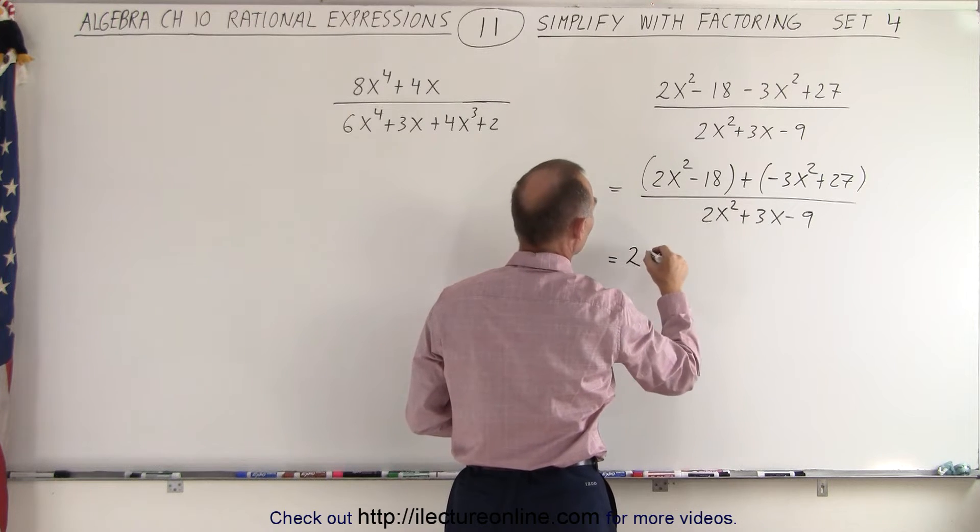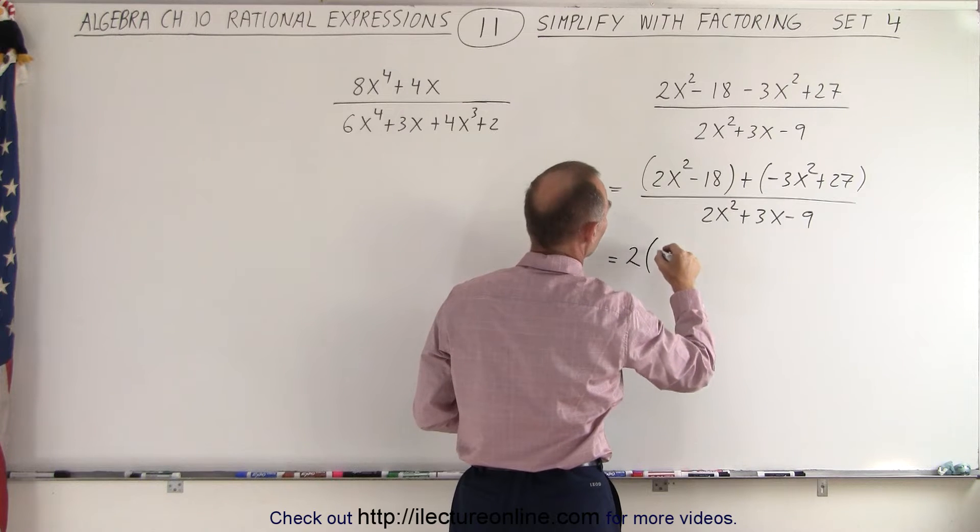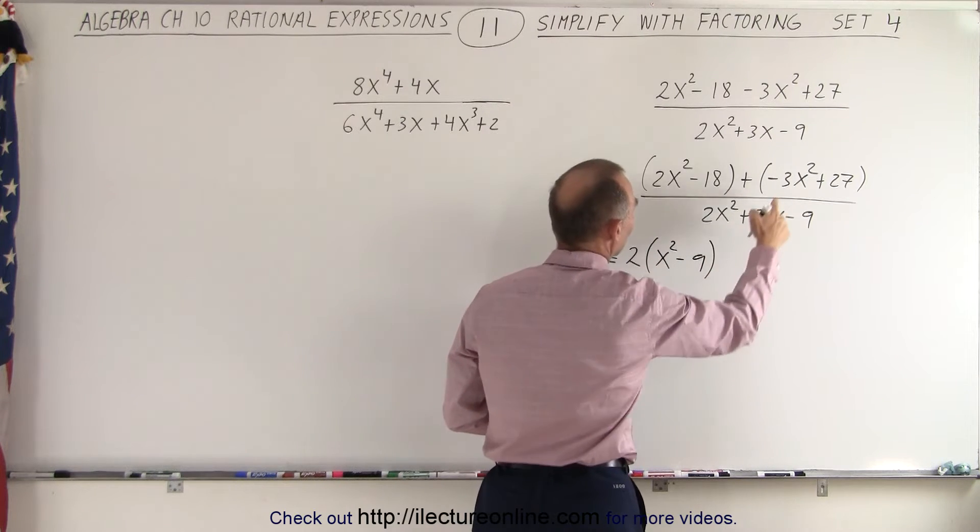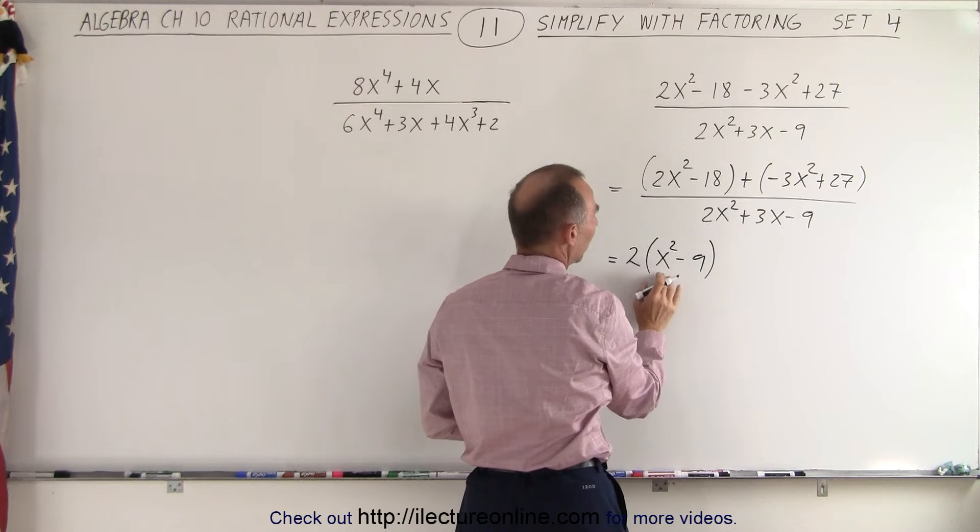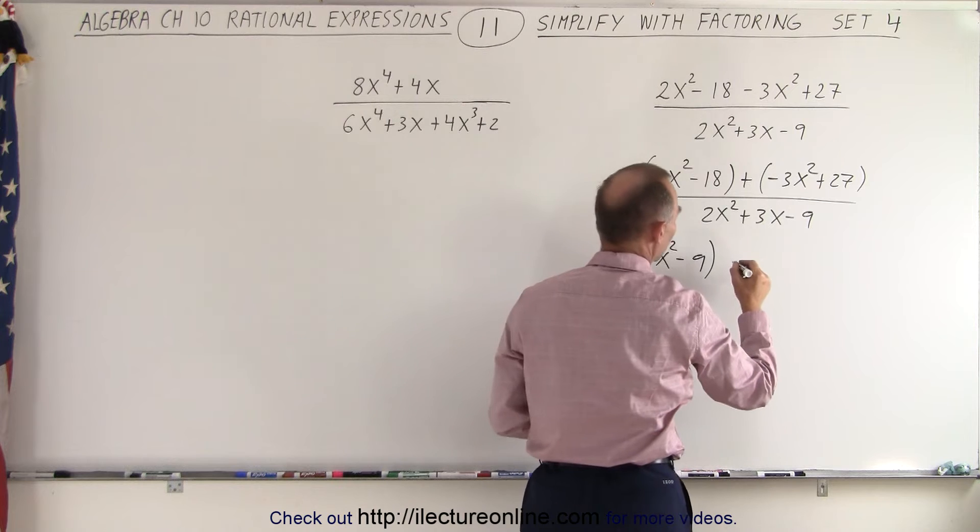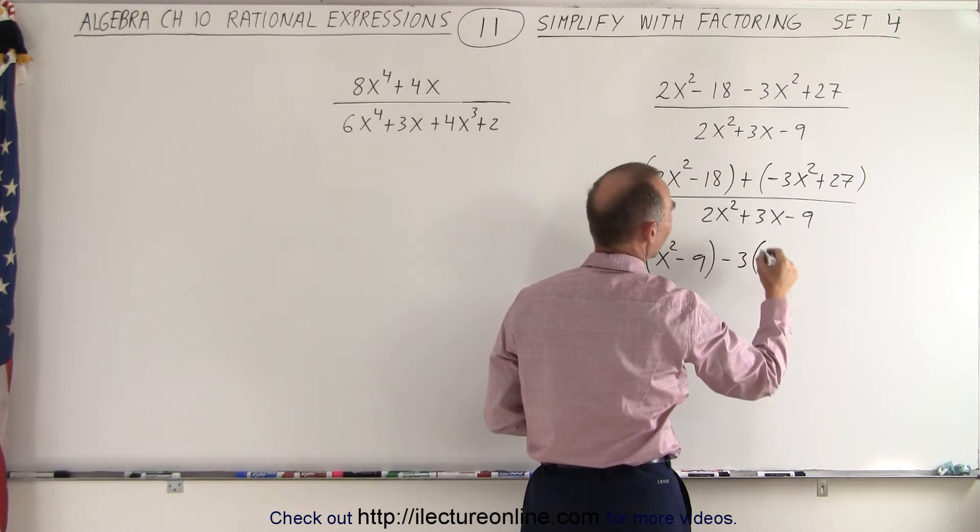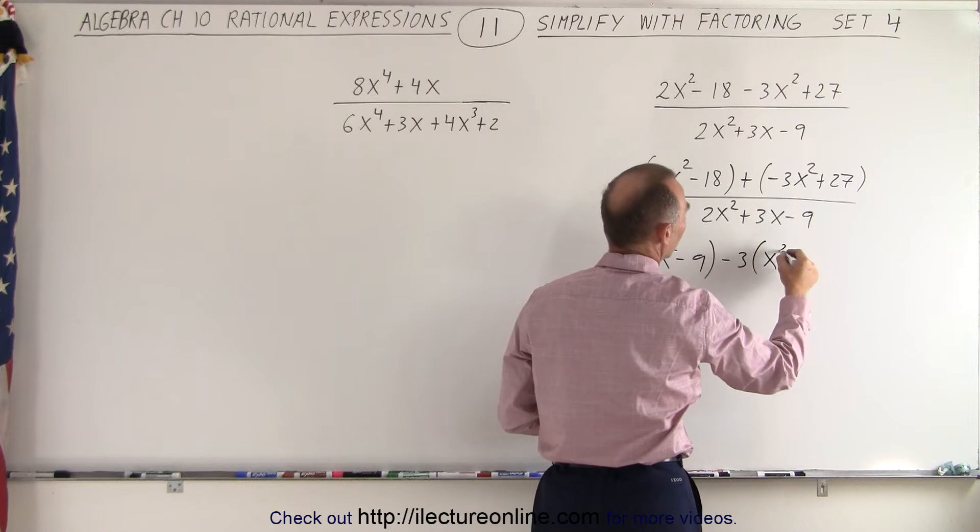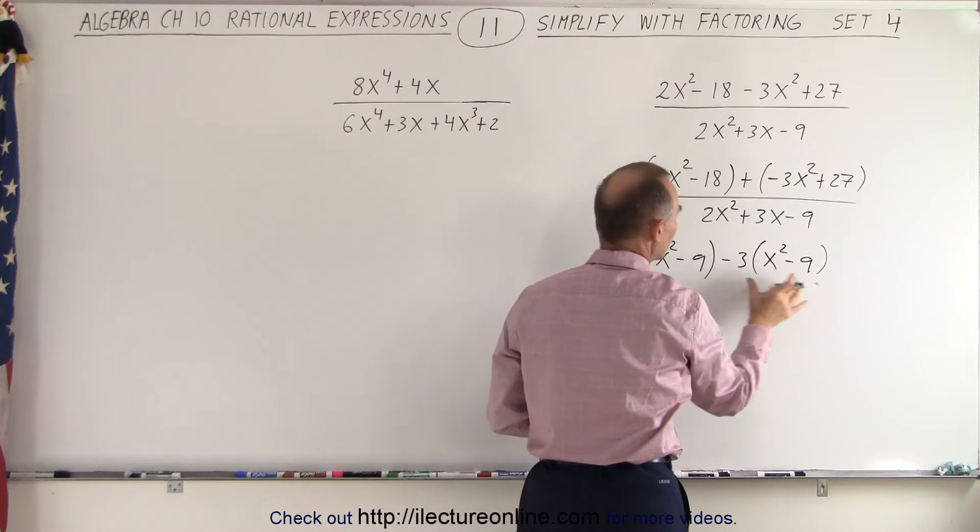So when we do that, we get 2 times x squared minus 9. And over here, if we want to end up with a positive x squared and a negative number here, we'll factor out a negative 3. So minus 3 times, we end up with an x squared minus 9 as well.